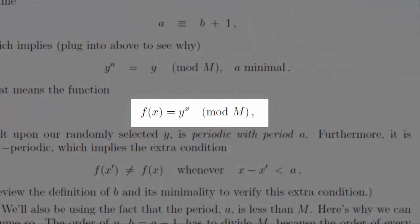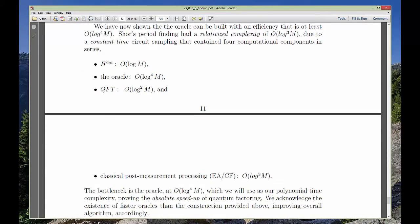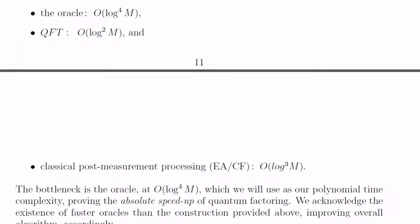They're polynomial. Therefore, in those cases we have absolute exponential speedup, and we can finally go out and celebrate at our favorite restaurant.